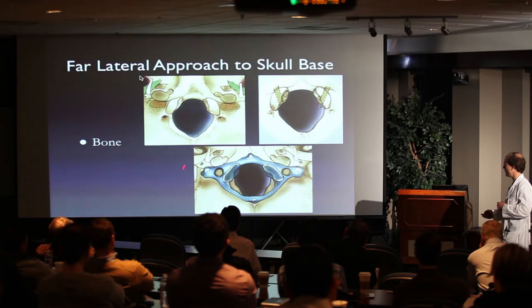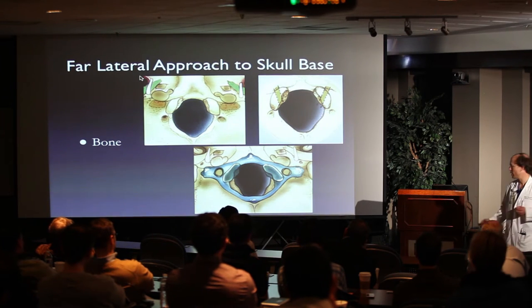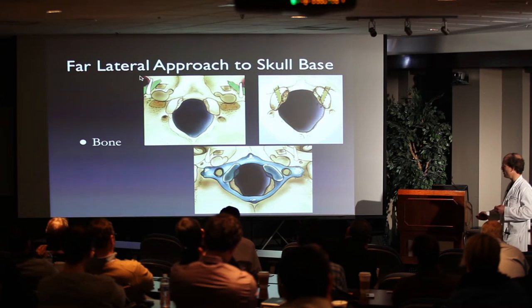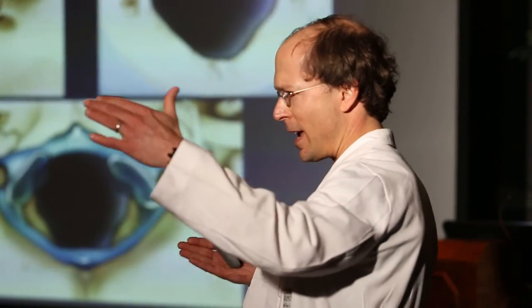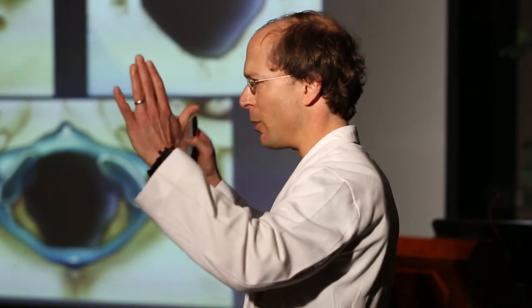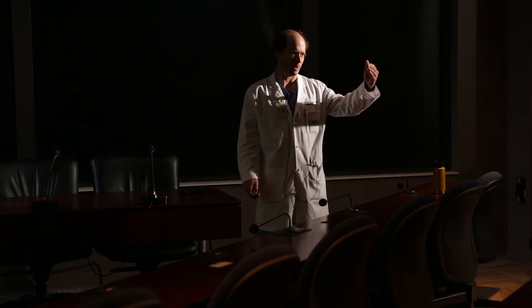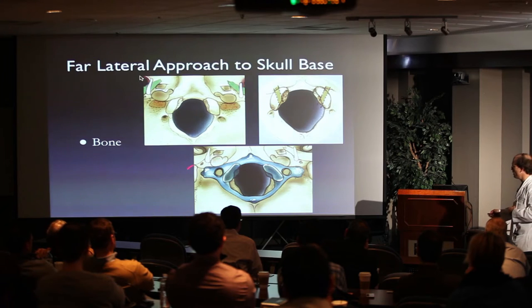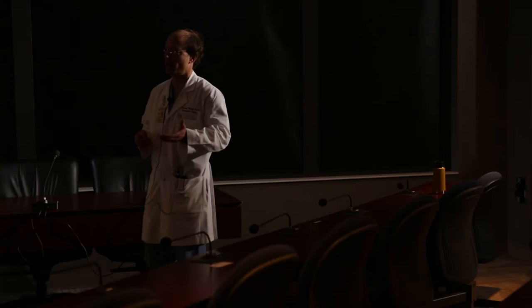The C1 vertebral body is really important to understand — not only the midline process but also the tubercle of C1. If you stay between those fill-in posts you're fine, but if you go anterior to that you're in a lot of venous bleeding. You never want to go past this area because it's a whole other world of anatomy.